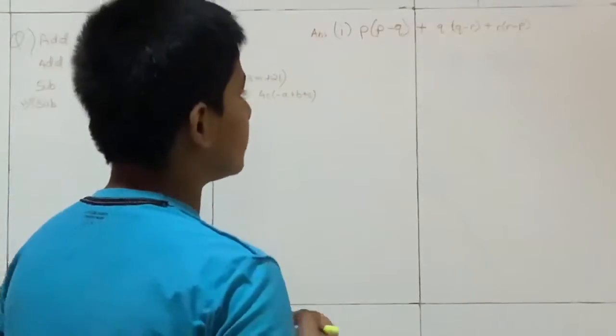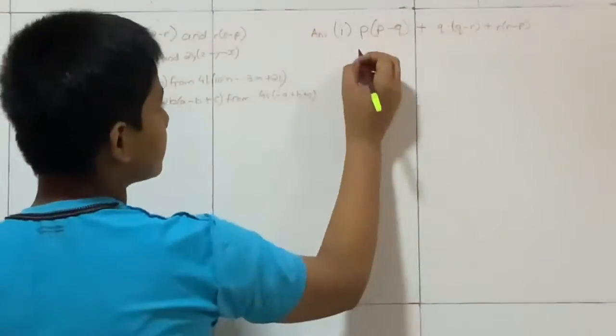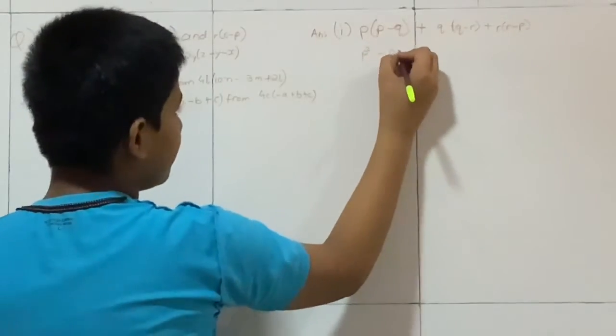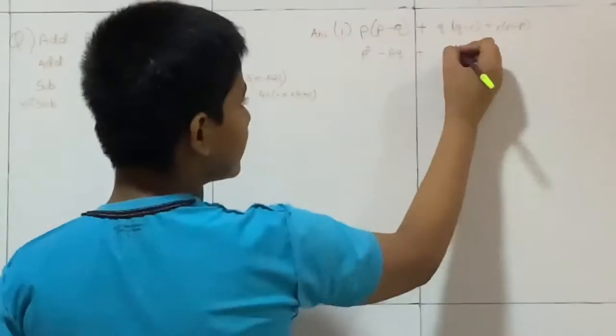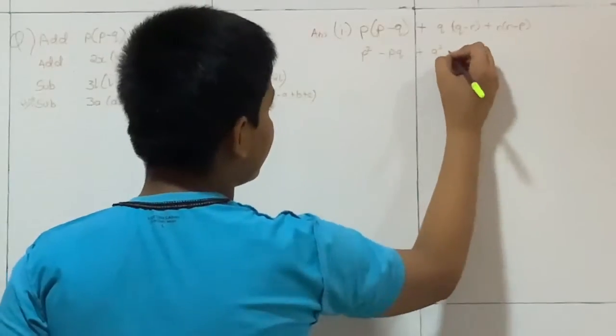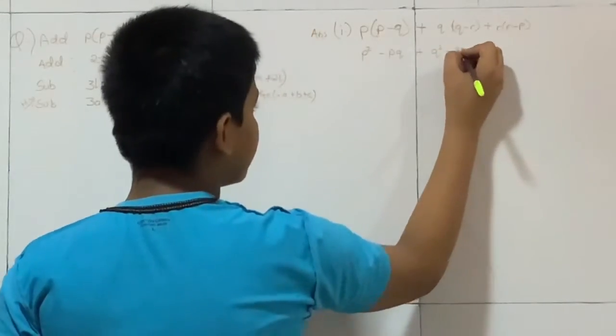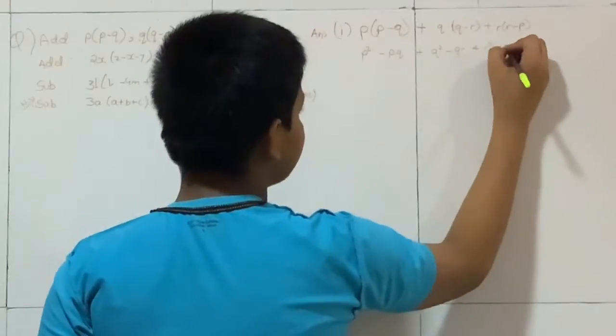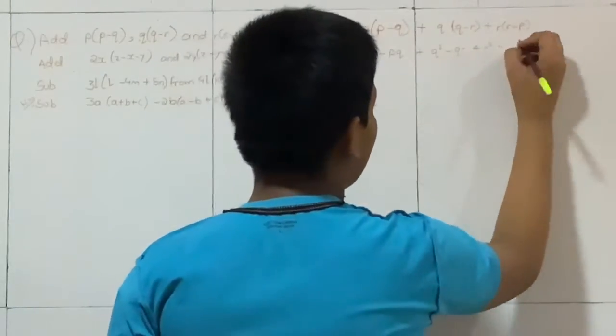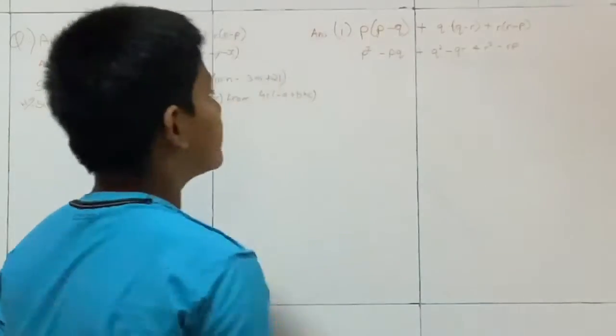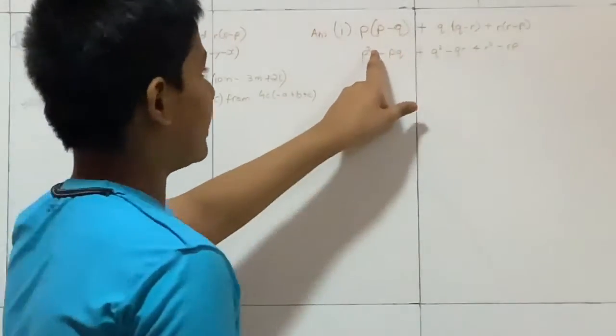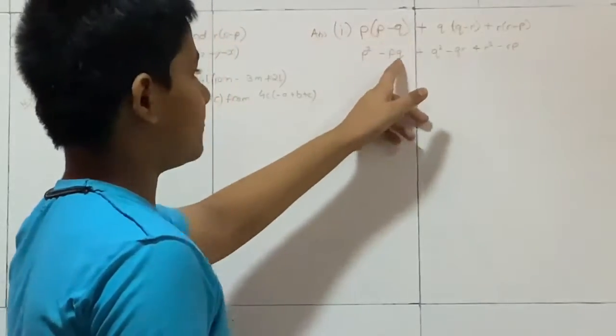Here first we need to multiply the brackets. So here what we get is P square minus PQ plus Q square minus QR plus R square minus RP.